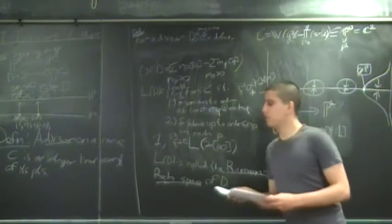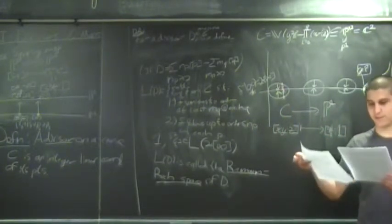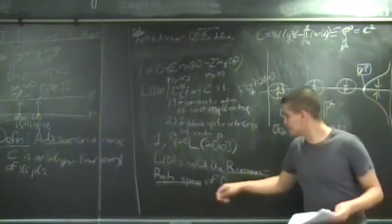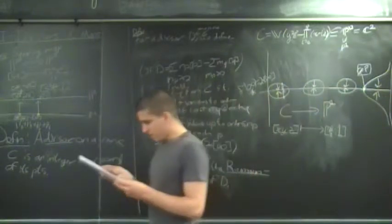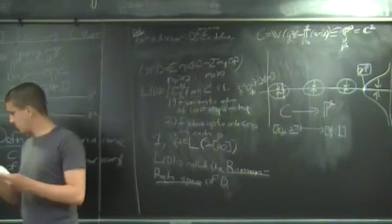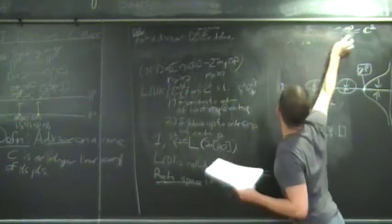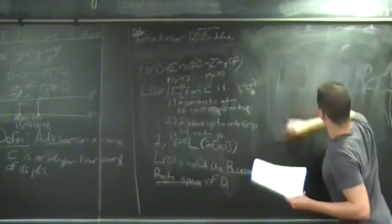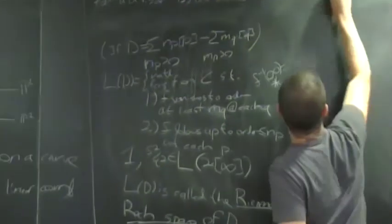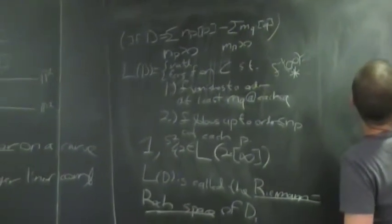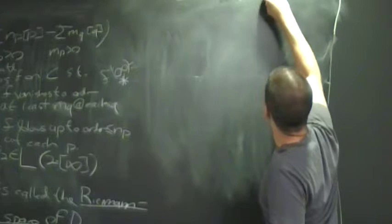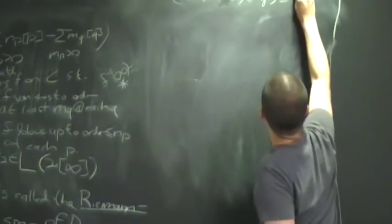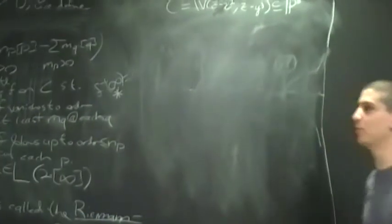I'm going to talk about a couple more examples before I finally state the Riemann-Roch theorem, which will basically give a formula for the dimension of this space. A curve that came up as one of our examples yesterday was the twisted cubic. Let's say it lives in P³ and there's a map from P¹ to P³.